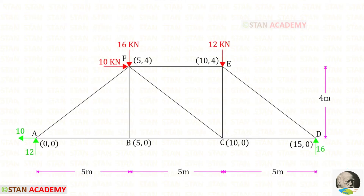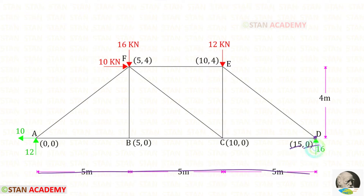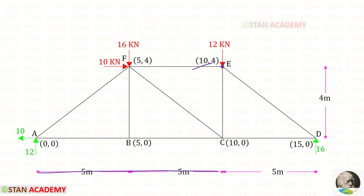By applying sigma V = 0 we can find VD, and by applying sigma H = 0 we can find HA. Now we have to find the coordinates in the x and y directions. Let us keep point A as the origin, so x and y are 0 there. Point B: x = 5, y = 0. Point C: x = 10, y = 0. Point D: x = 15, y = 0. Point F: x = 5, y = 4. Point E: x = 10, y = 4.